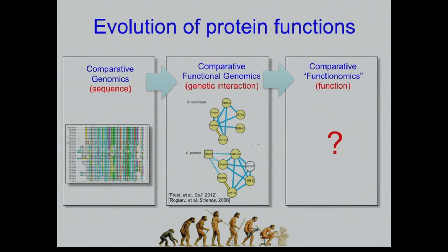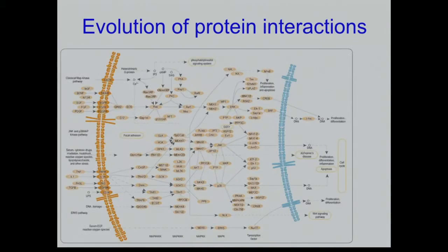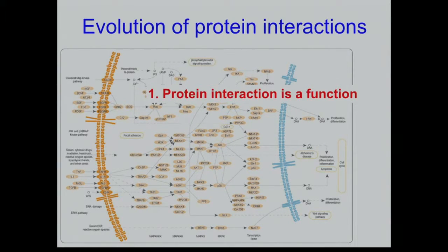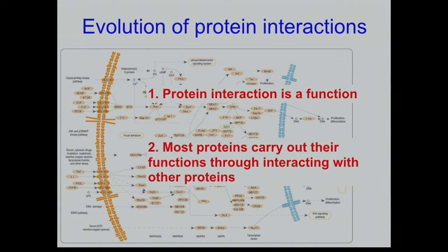When you do comparisons, it could be that a genetic interaction is there or not because a gene lost a redundant copy in one of the species, giving interpretation difficulties. What we really want to do is directly compare function — comparative functionomics — by looking at how interactions evolve, because protein-protein interaction is protein function, and most proteins have to bind other cofactors to carry out their function.